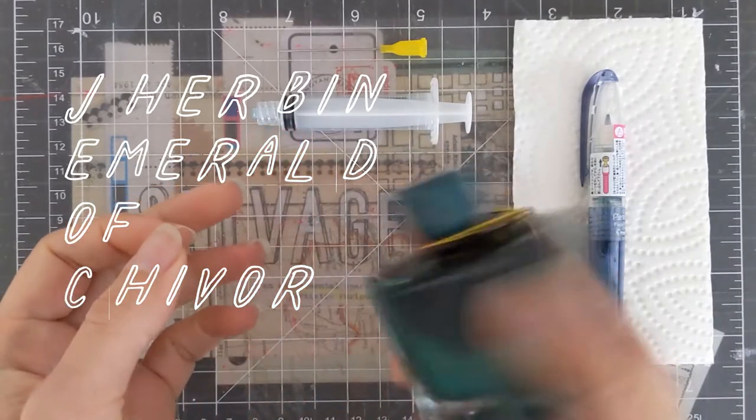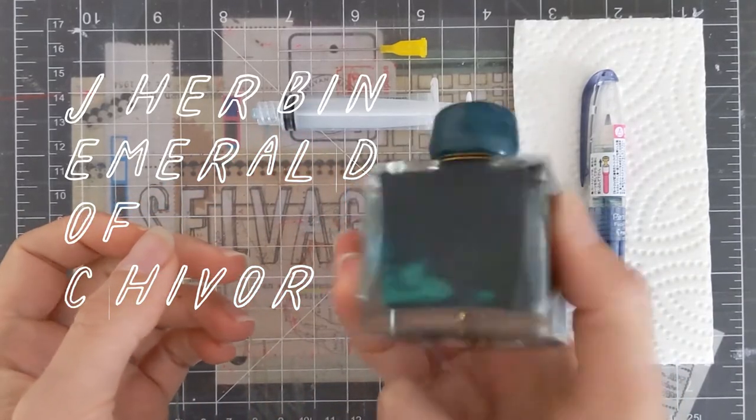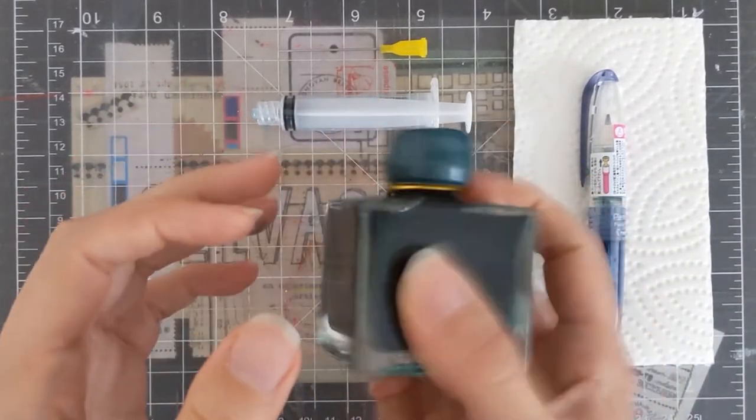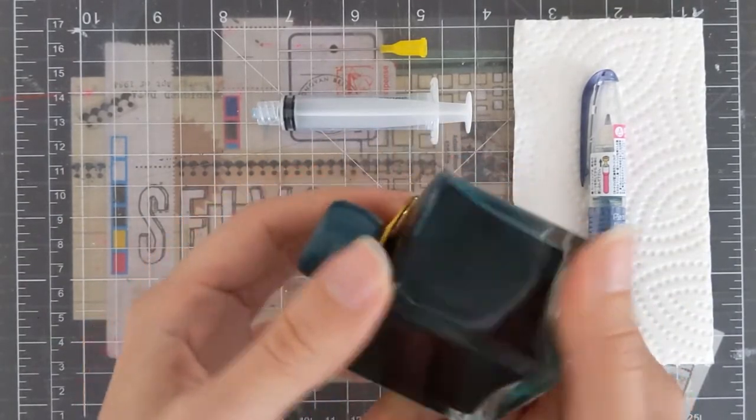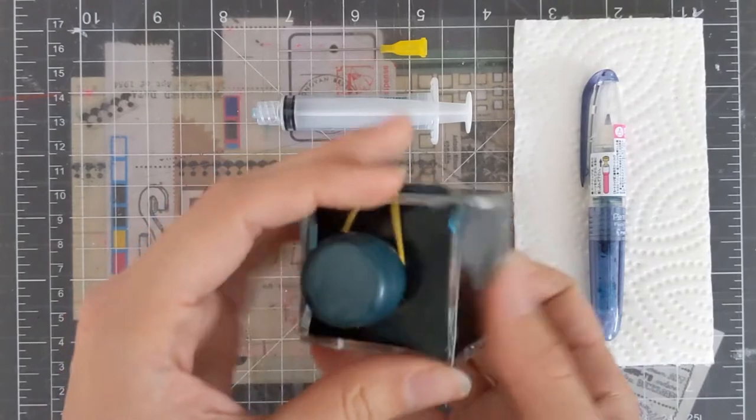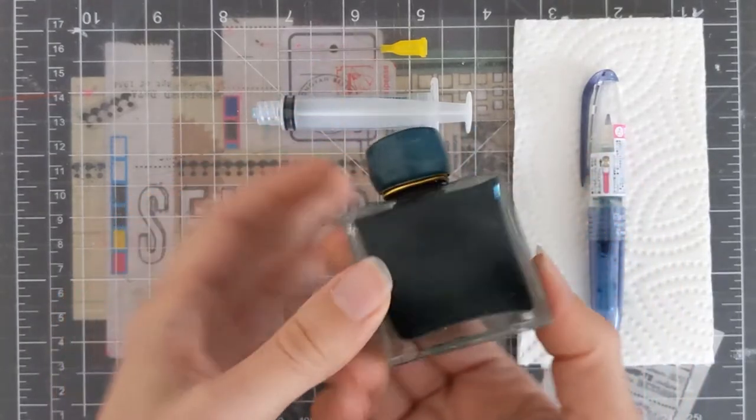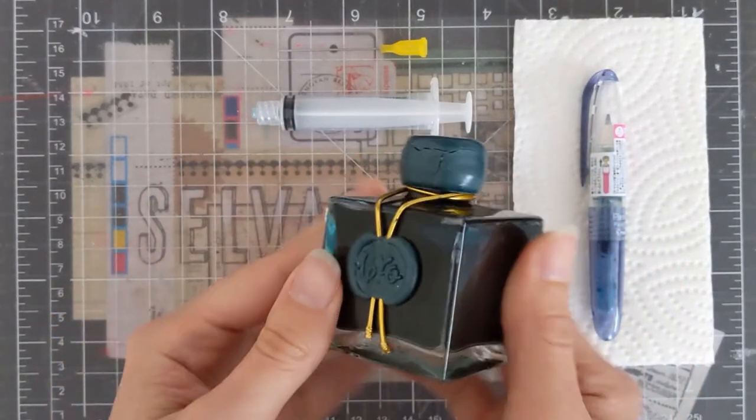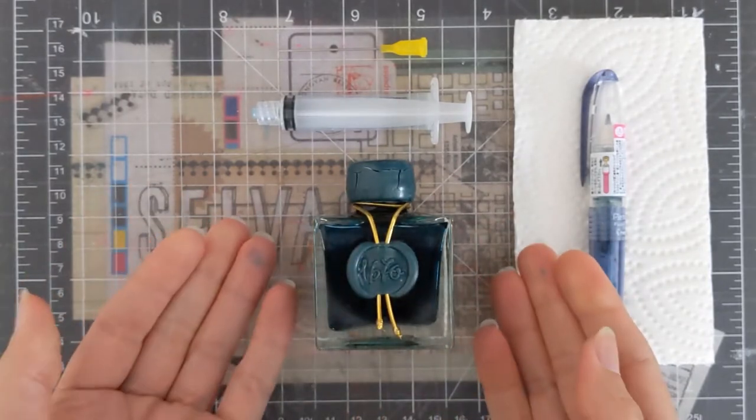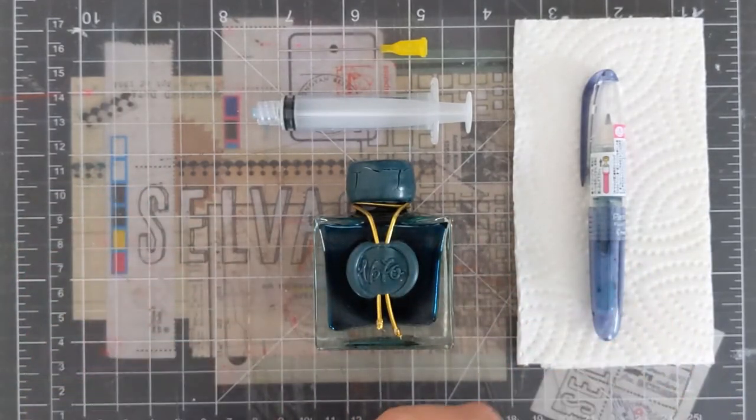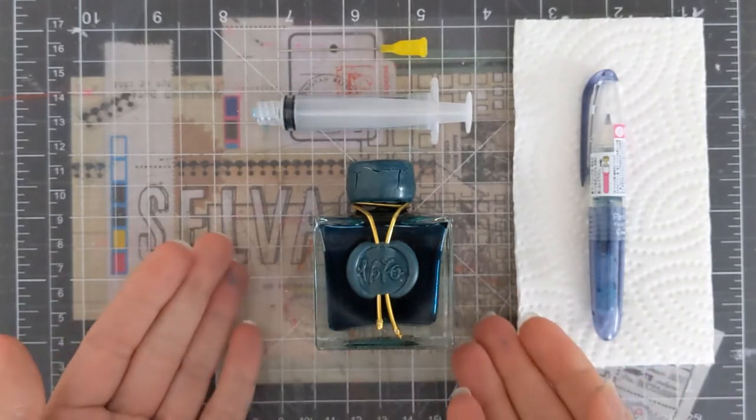This is a J. Herbin anniversary ink. It's got some particles in it that make it shimmery and shiny. It's this beautiful bottle of ink. But since I'm not a fountain pen person, I can't really make a ton of use of it.